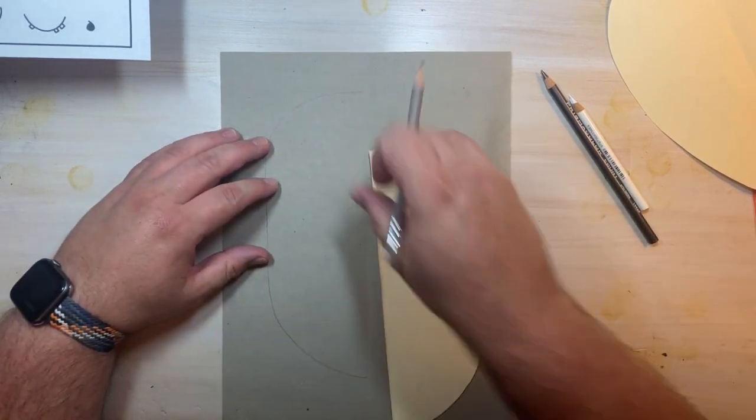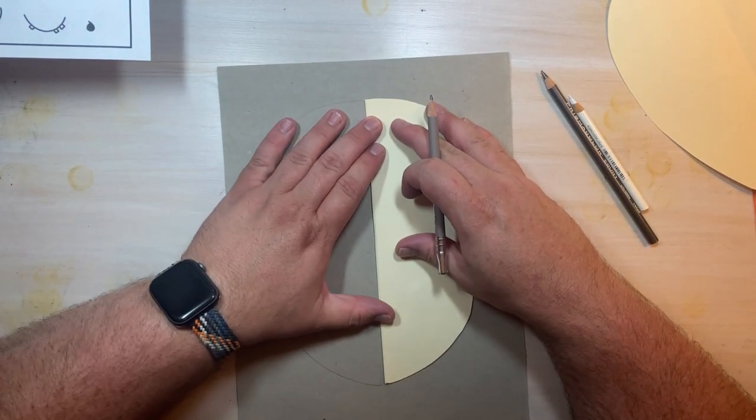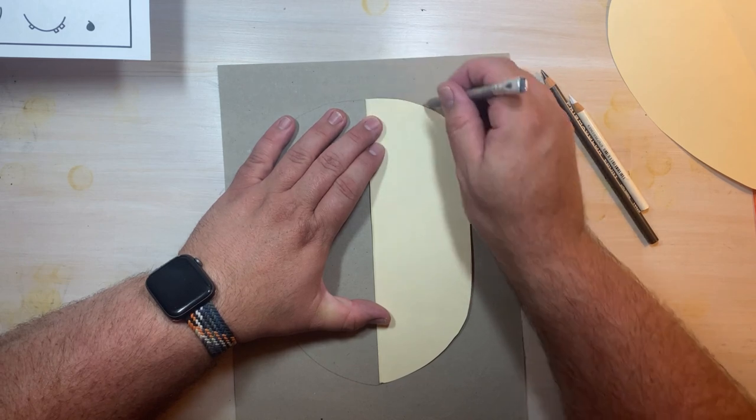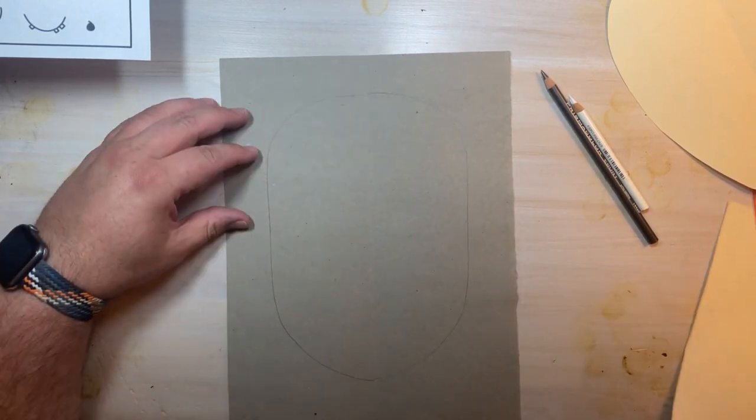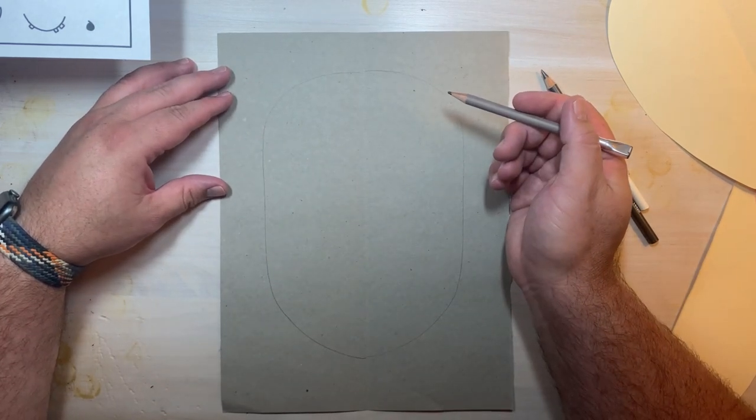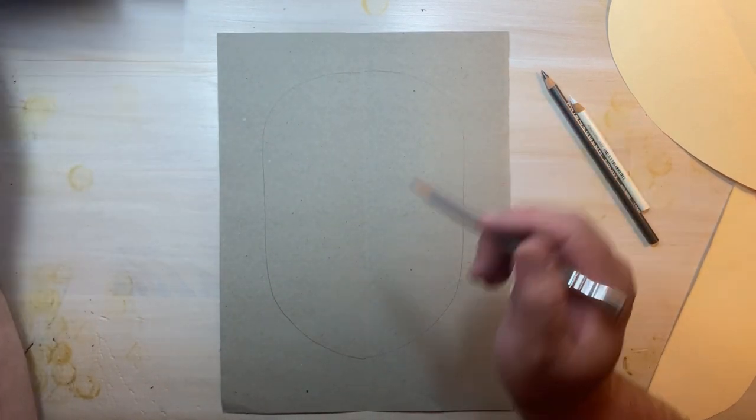Once I have that shape I will flip the image, line it up again on the crease and trace that side. This will give me a symmetrical head shape for my Tim Burton style portrait.